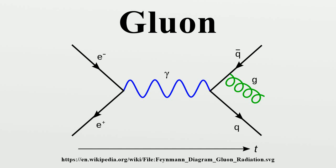Gluons are elementary particles that act as the exchange particles for the strong force between quarks, analogous to the exchange of photons in the electromagnetic force between two charged particles. In layman terms, they glue quarks together, forming protons and neutrons.